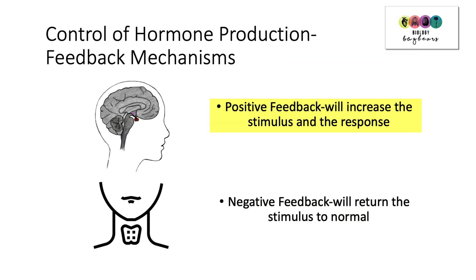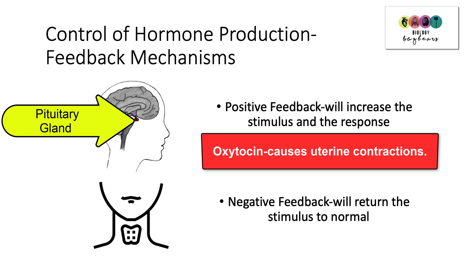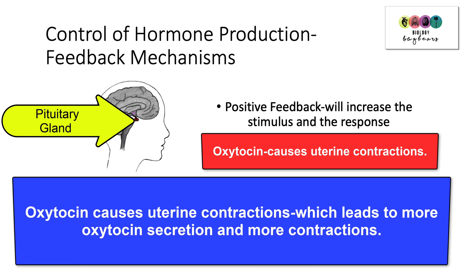With positive feedback it results in the stimulus being increased and also the response. We consider oxytocin as an example. Oxytocin is a hormone secreted by the pituitary gland and it causes uterine contractions. This is all kicked off by the stretching of the uterus near the end of pregnancy when the baby is pushing down on the cervix. Oxytocin is secreted, resulting in more uterine contractions, which in turn leads to more oxytocin secretion and more contractions — everything gets amplified. The stimulus, which was the stretching or those initial contractions, and the response, the production of oxytocin and further contractions, are both increased.